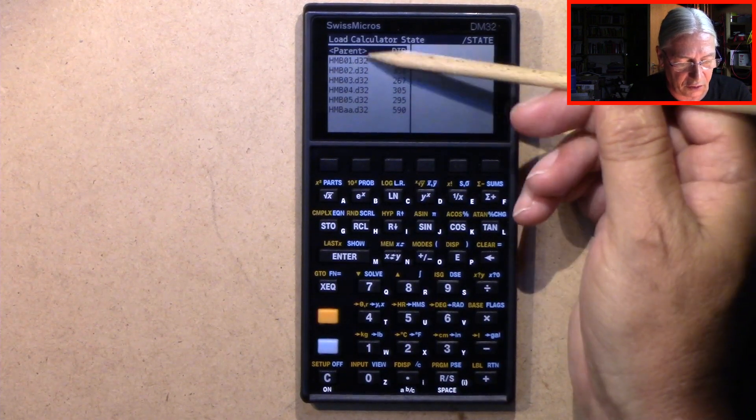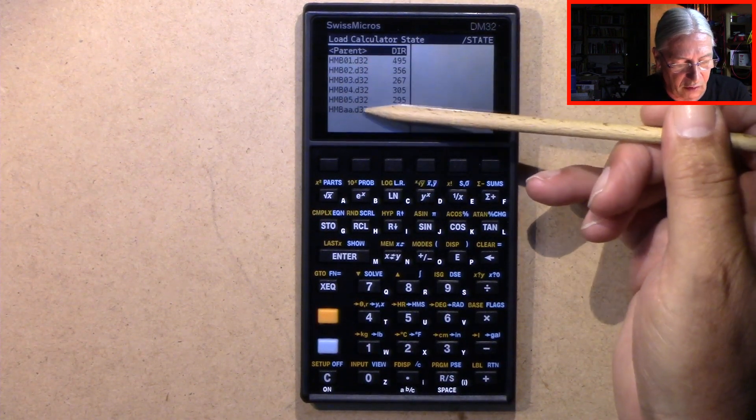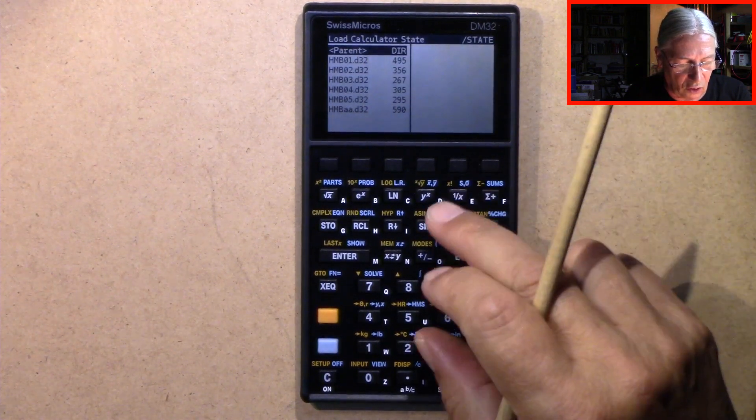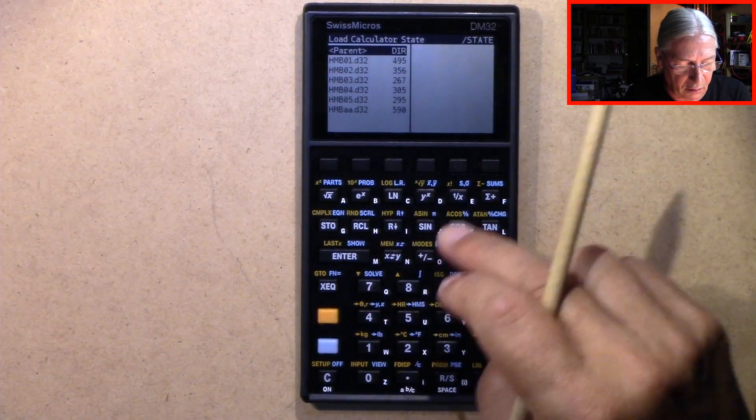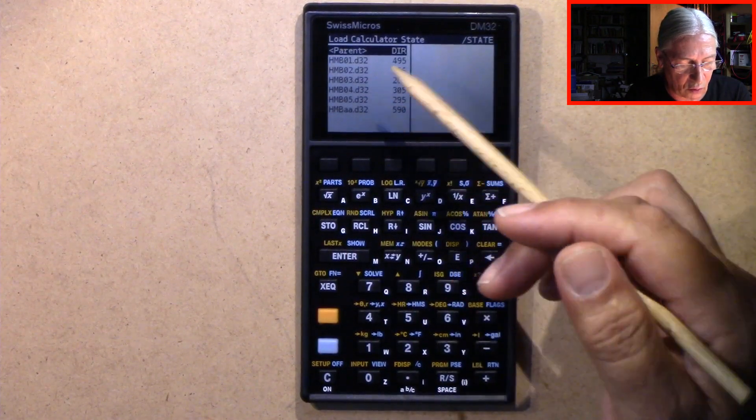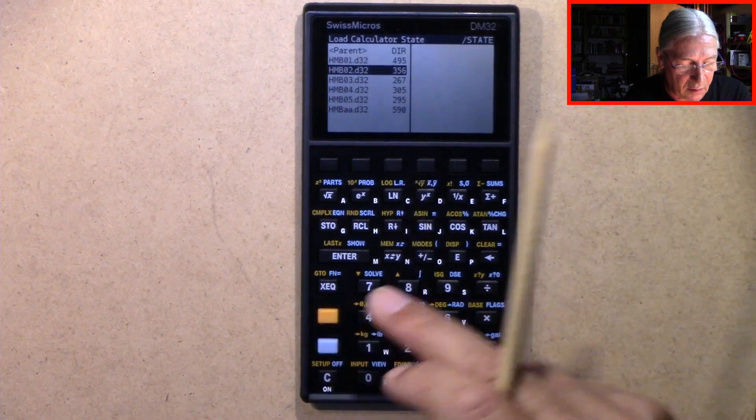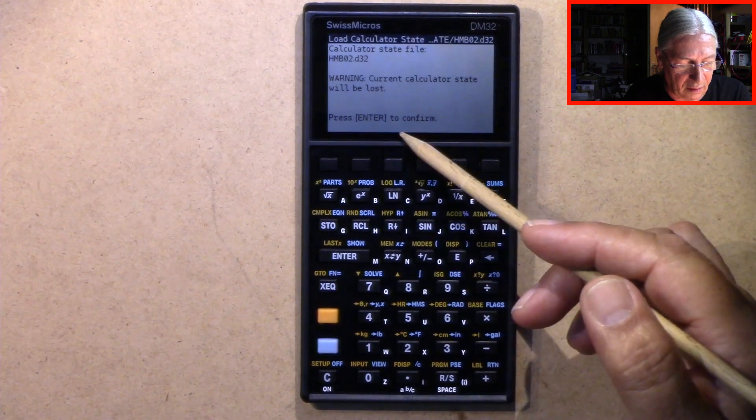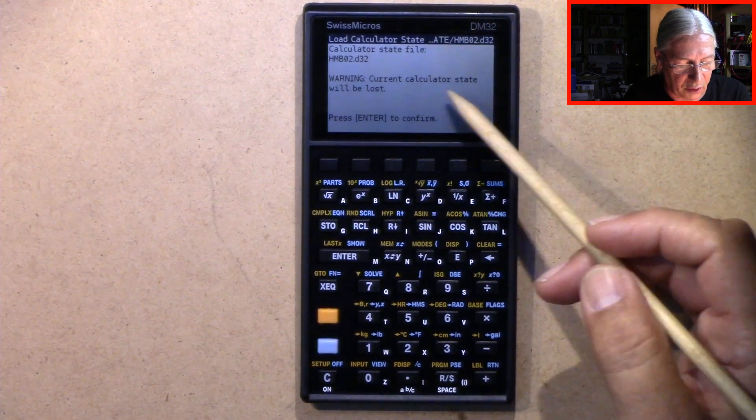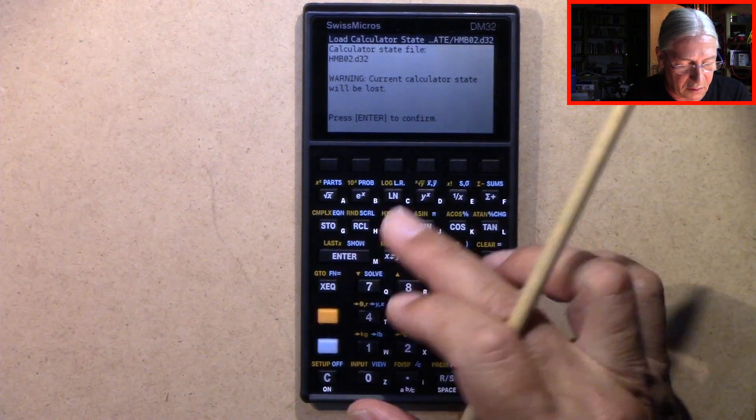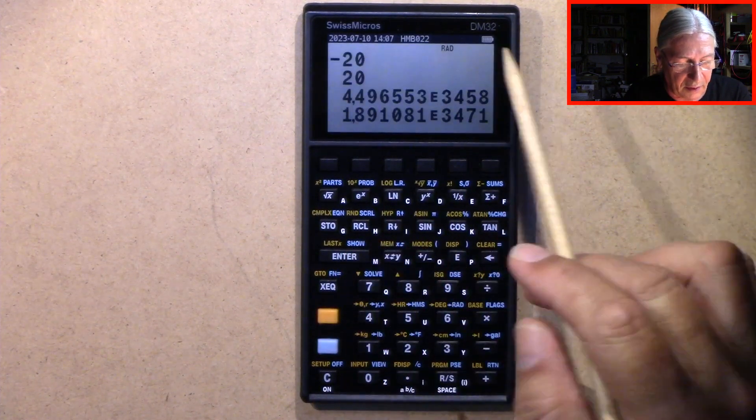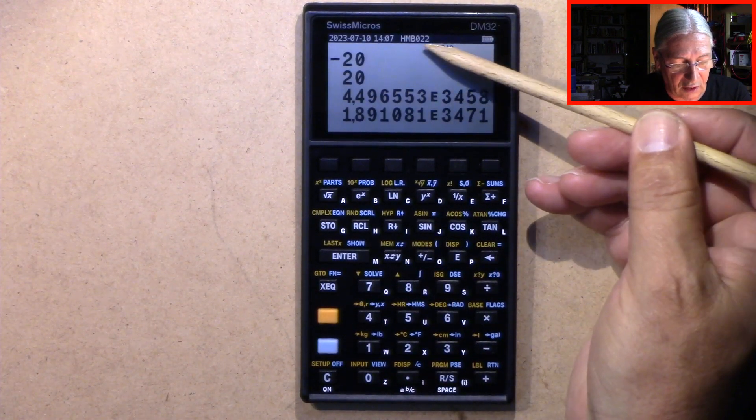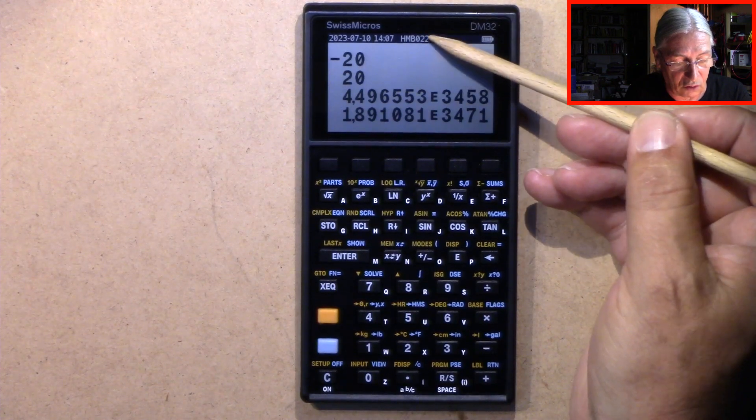Here we see all the files I have created. We can also load states from here. Let's go to O2 again. Current calculator state will be lost, that's no problem for us. Now we have a new state as you can see here, it has added a two.